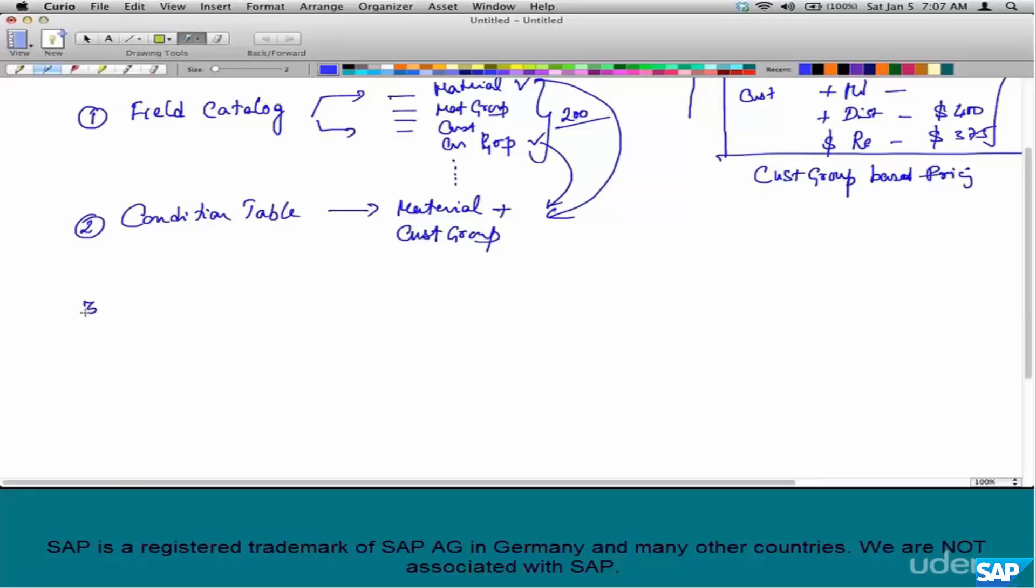Step 3 is access sequence. What is an access sequence? The sequence in which the condition tables need to be accessed.